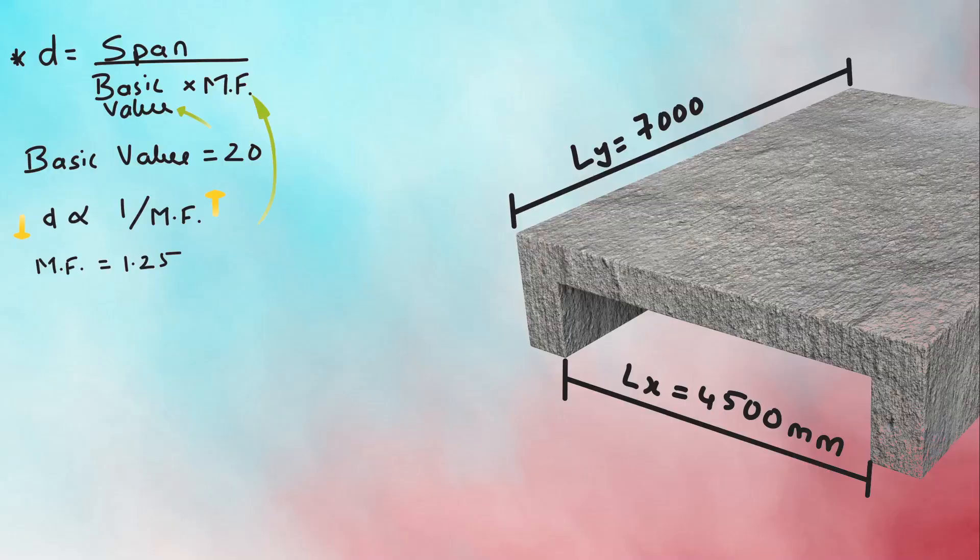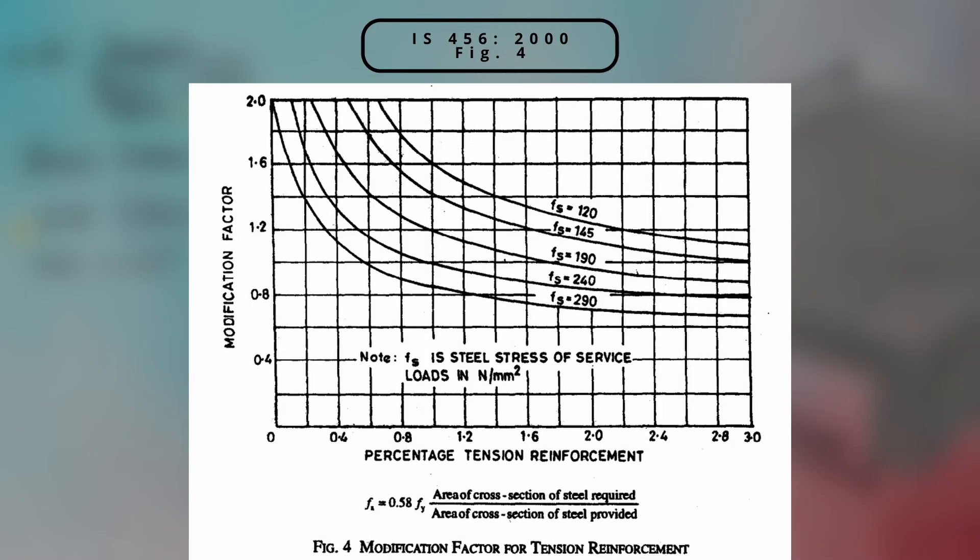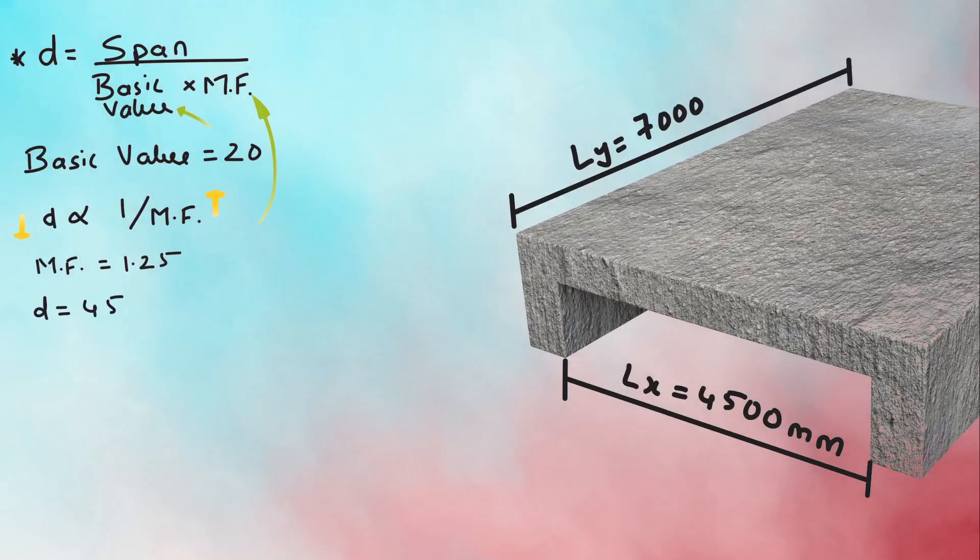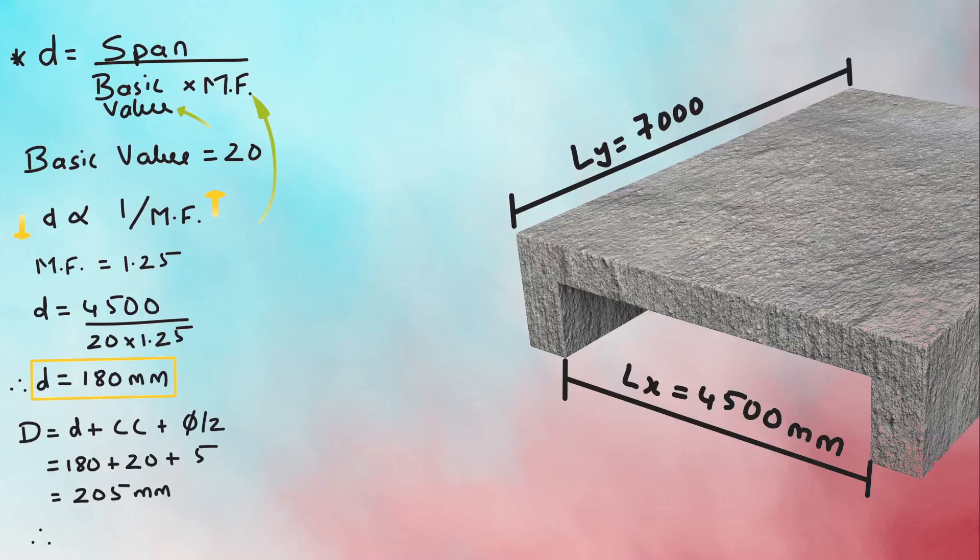But later, we will calculate modification factor as per figure 4 of IS 456-2000. Substituting the values in the equation, D equals 4500 divided by 20 into 1.25, which gives an effective depth of 180 mm. And the total depth D is the effective depth plus clear cover plus half the diameter of bar, which is roughly 225 mm.